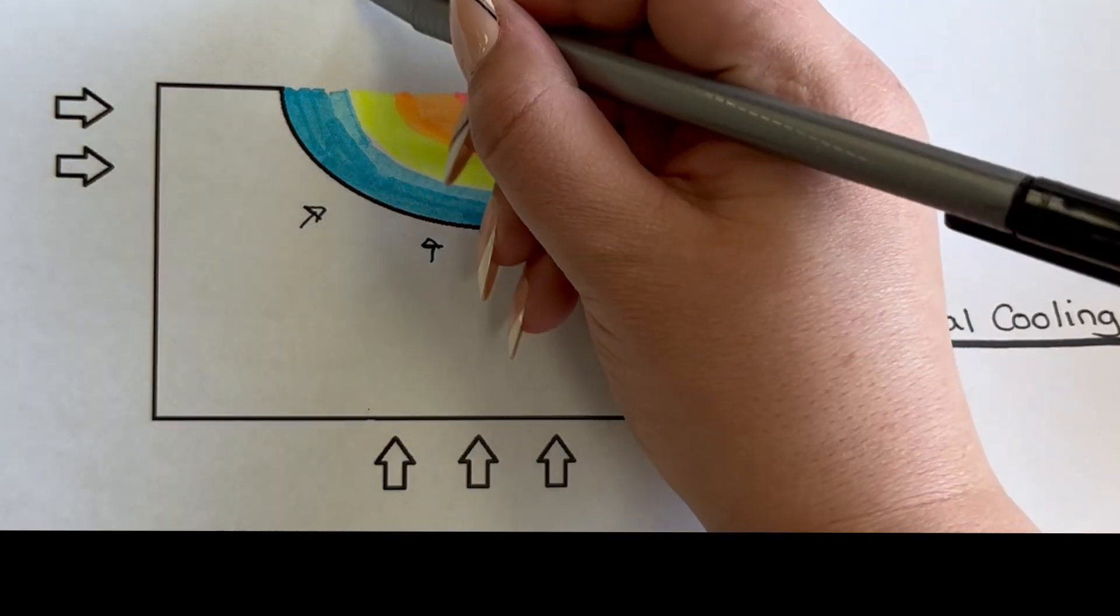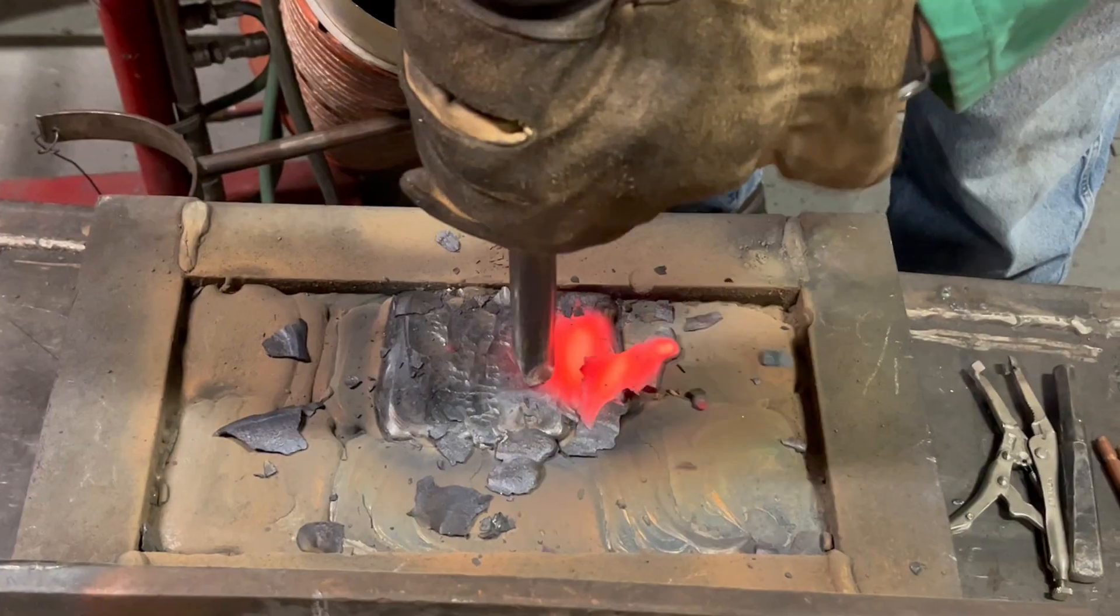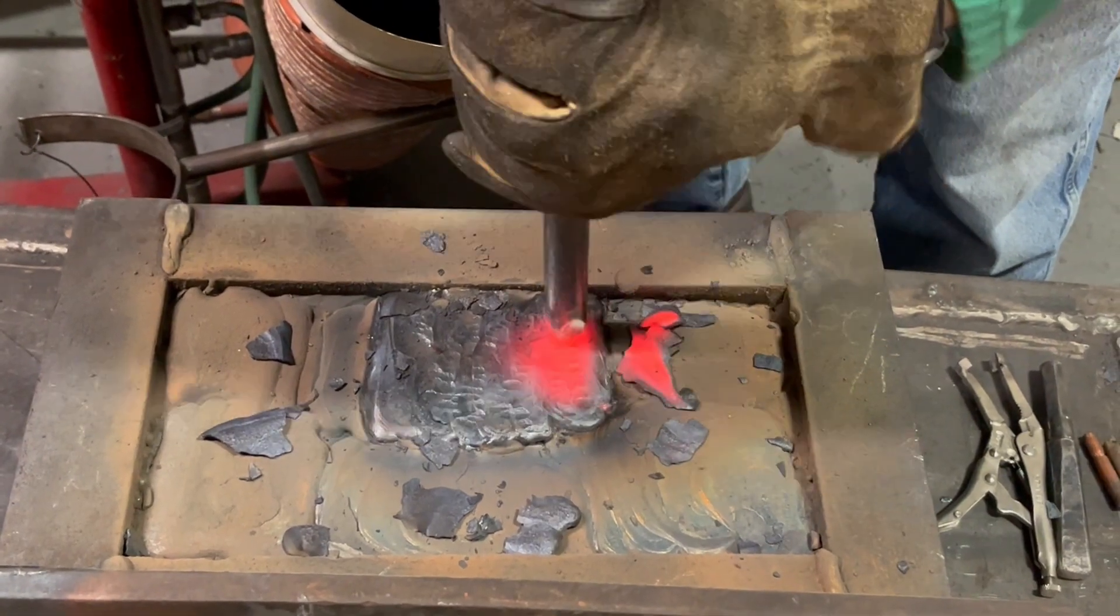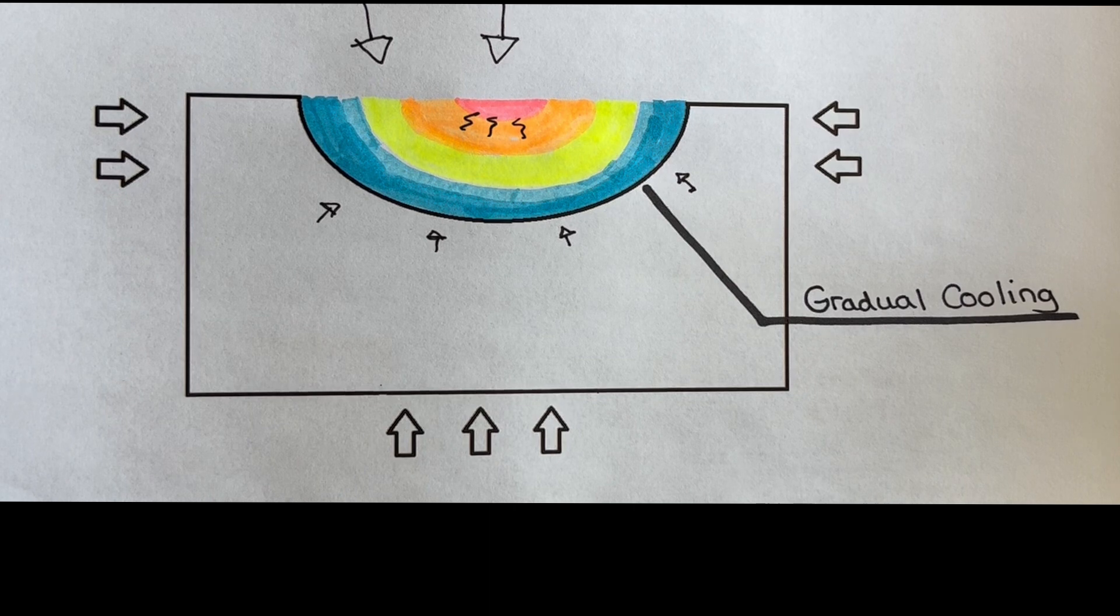Peening performed at the right time while the weld still has some red color in it, as you can see in the video here, can prevent the shrinkage stress that causes the cracking.